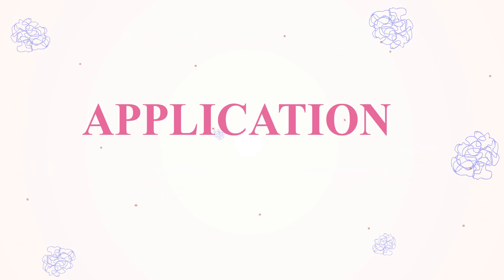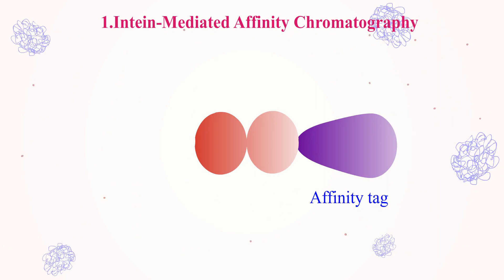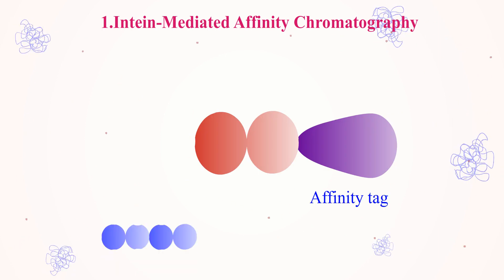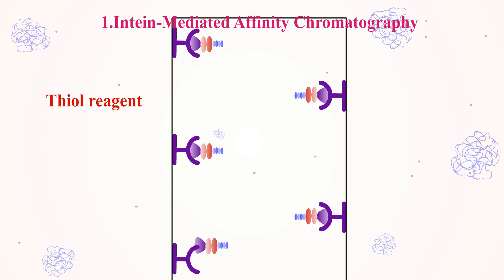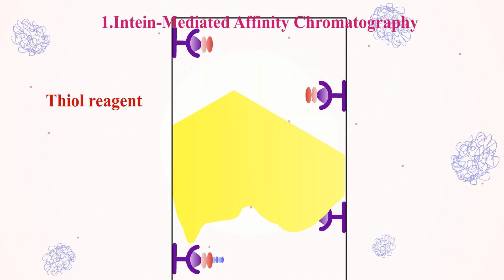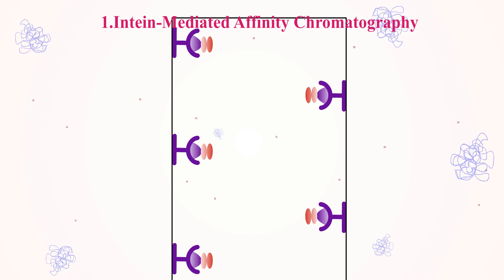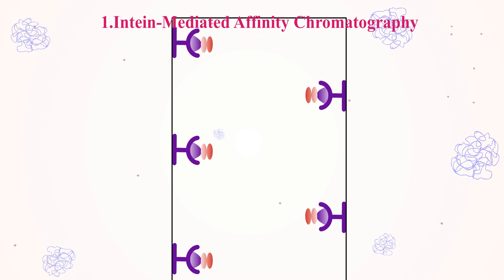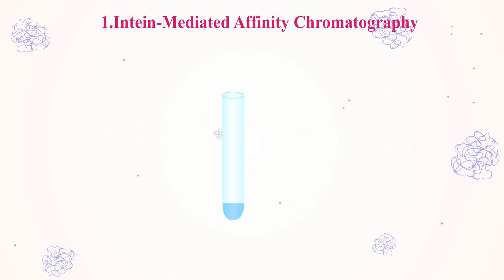Intein splicing has certain applications. The first application is intein-mediated affinity chromatography. Intein-mediated protein purification systems work by fusing one terminus of the intein to an affinity tag and the other terminus to a target protein. After adsorption onto an affinity column, a thiol reagent is introduced, which attacks the thioester moiety resulting from the N-to-S acyl rearrangement and cleaves the protein off the affinity column.